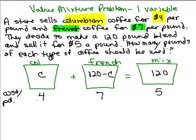Now what can we do from here? I can figure out how much the Colombian costs, how much the French costs. So let's see, I want to write down what the total cost of each type of coffee would be. Well for the Colombian, it would be $4 for every pound and I've got C pounds. So I would multiply the 4 times the C.